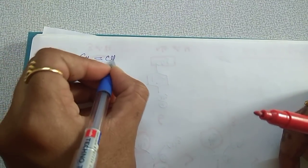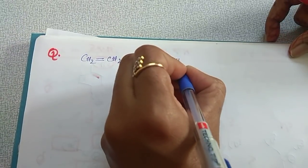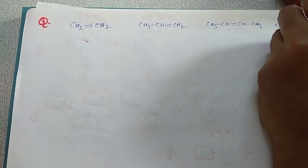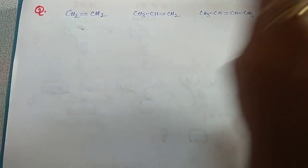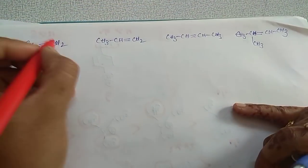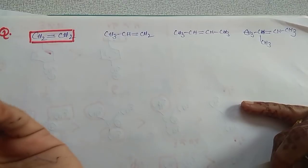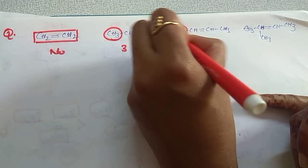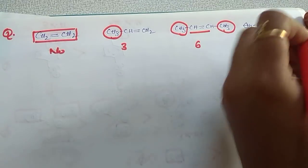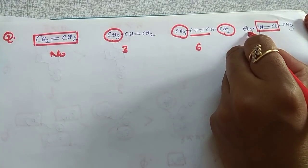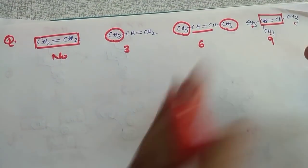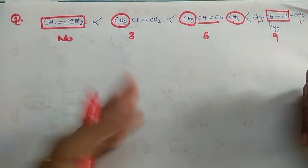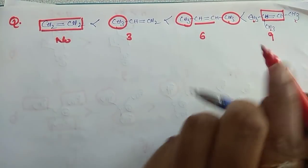Now, questions on alkenes. Try this: among four structures, which is most stable? Count the alpha hydrogens to the double-bonded carbon. Structure 1 has no alpha hydrogens. Structure 2 has 3 alpha hydrogens. Structure 3 has 3 + 3 = 6 alpha hydrogens. Structure 4 has 3 + 3 + 3 = 9 alpha hydrogens. More alpha hydrogens means more stability. So the stability order is: structure 4 > structure 3 > structure 2 > structure 1.